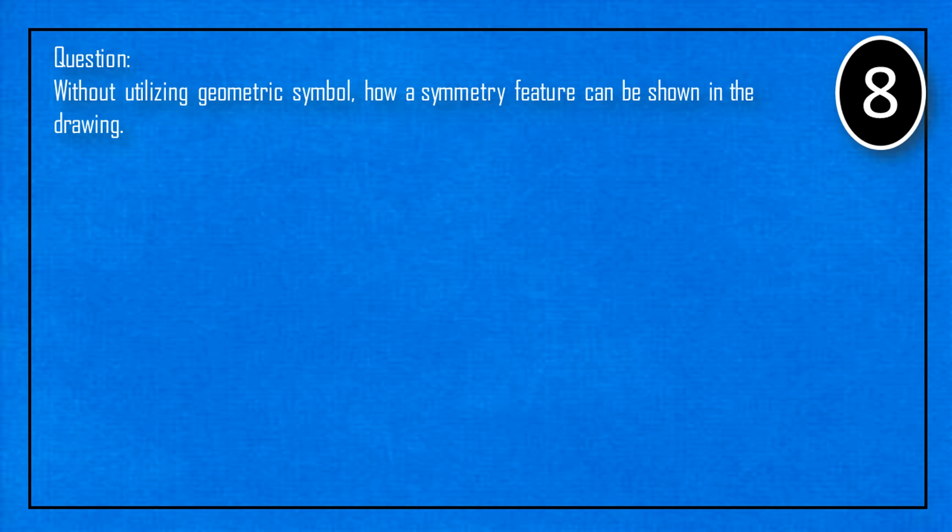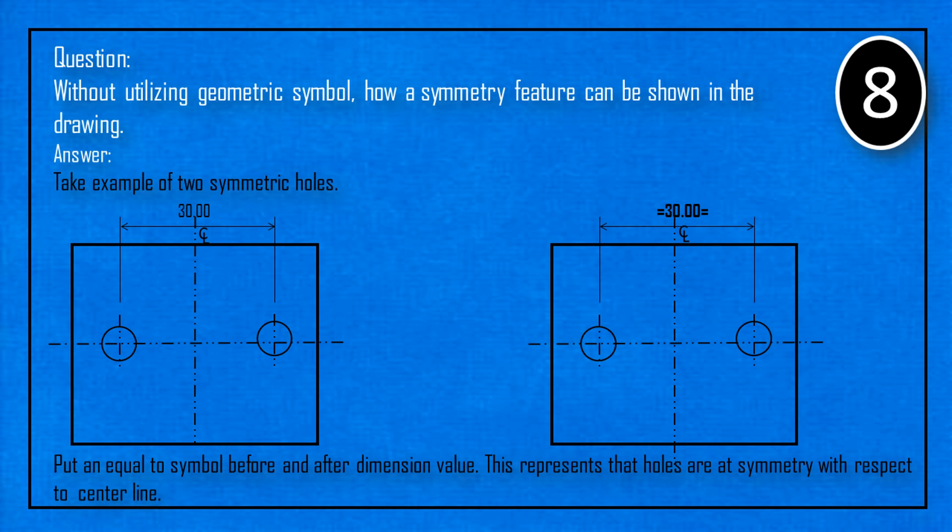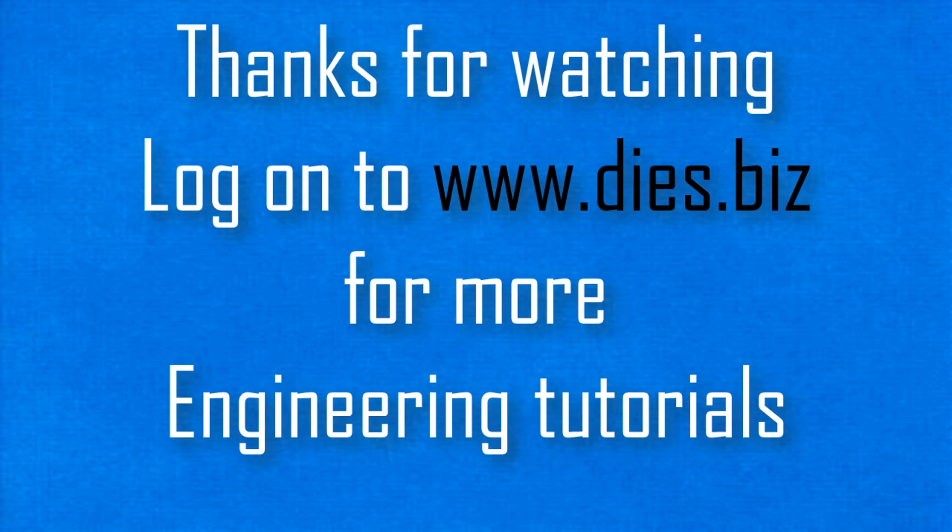Without utilizing geometric symbol, how a symmetry feature can be shown in the drawing? Take the example of two symmetric holes. Put an equal to symbol before and after dimension value. This represents that holes are at symmetry with respect to the center line.